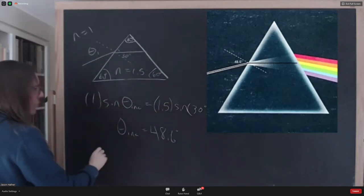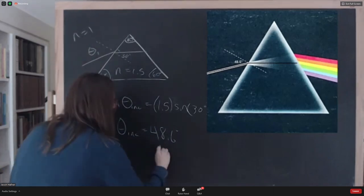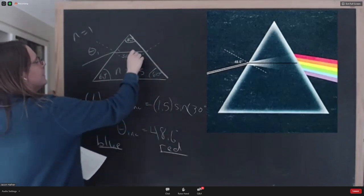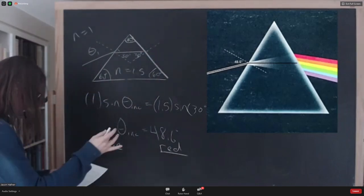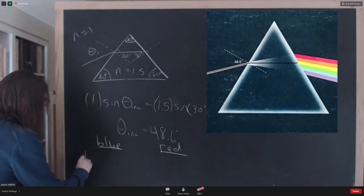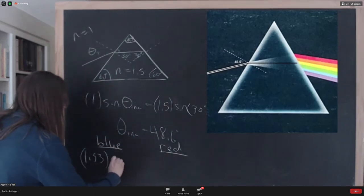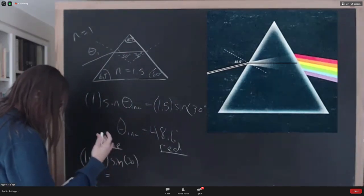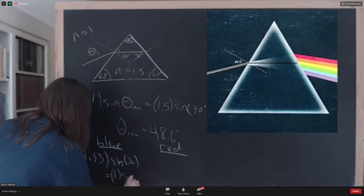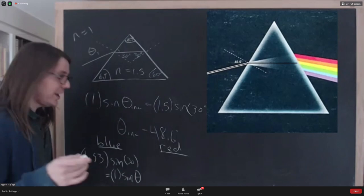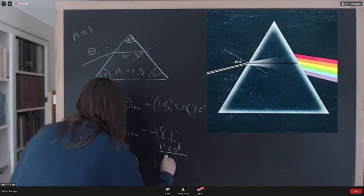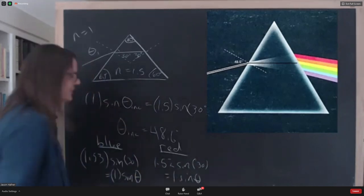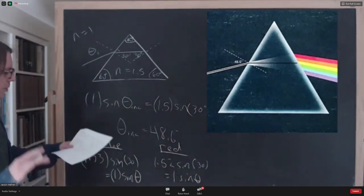Let's do it for blue and red. So here's blue. And here's red. Now if we draw a normal here. Now the incident angle, 30 degrees. So we know we're going to have for blue, 1.53 times the sine of 30 equals 1, air, times the sine of this angle we're looking for. But for red, it's going to be 1.52 sine of 30 equals 1 times the sine of theta.